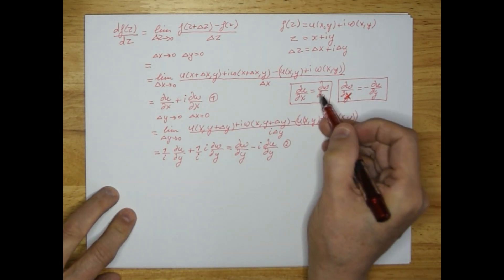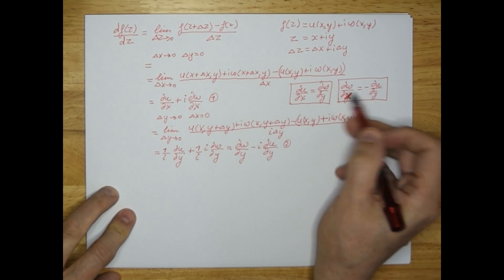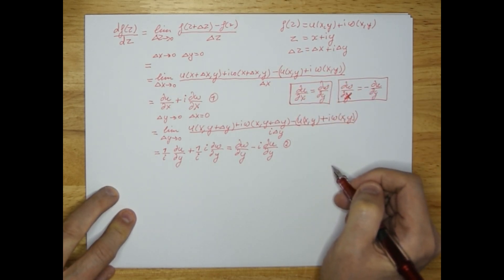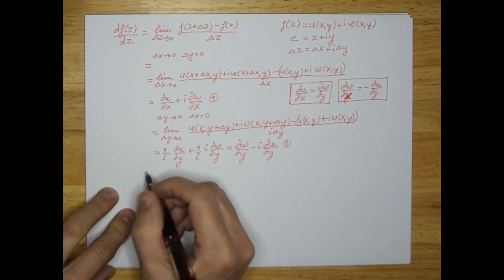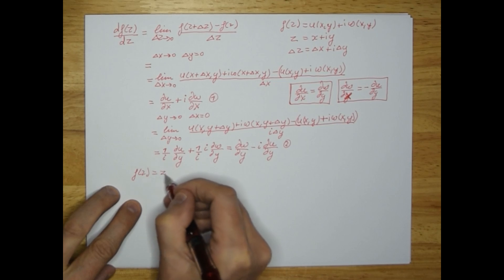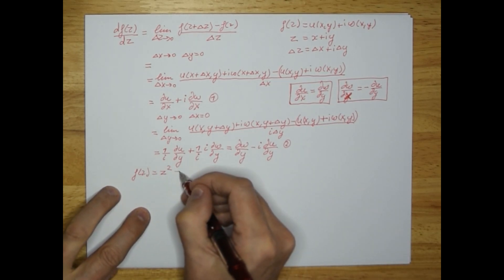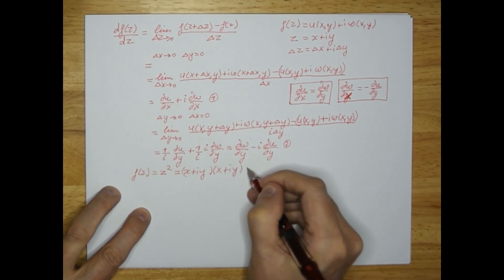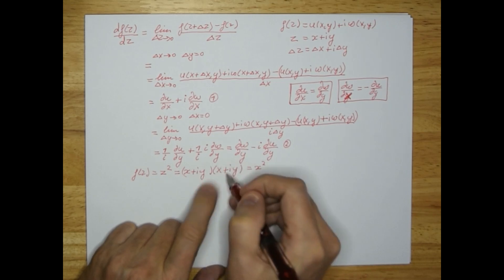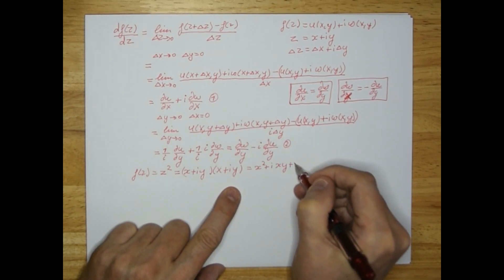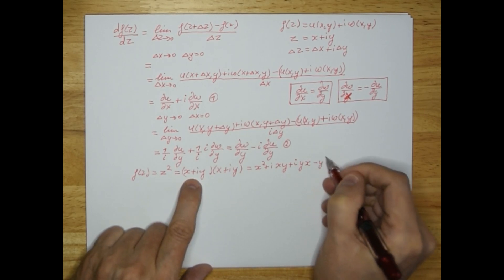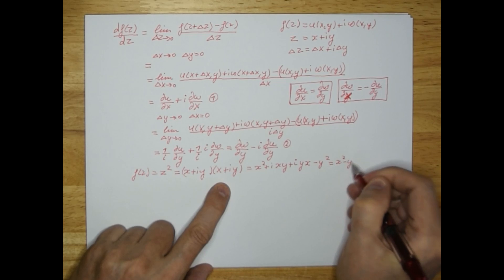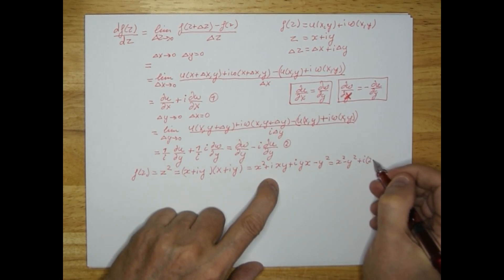By the way, these are very famous equations — they are called the Cauchy-Riemann relations, discovered by Cauchy and Riemann, two different people. Let's verify this with an example: let f(z) = z². What does that mean? z equals x plus i·y, so z squared gives x squared plus i·xy plus i·yx plus i²·y² — and since i times i is minus one, i times y times y is y squared.